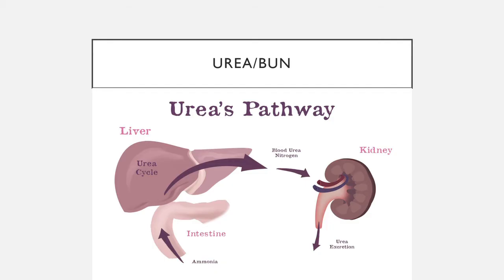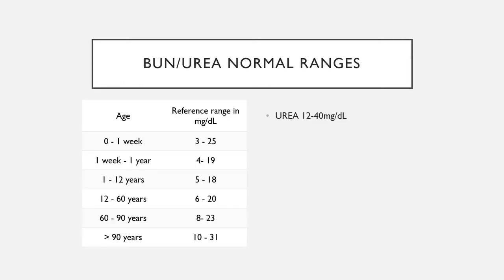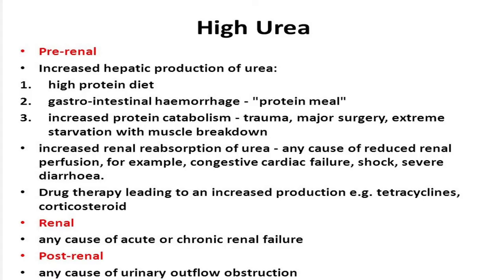The second parameter is urea, also called BUN or blood urea nitrogen. Urea is produced in the liver and excreted by the kidneys through urine. The normal range of urea is around 12 to 40 mg per deciliter, and BUN is roughly half that value. In adults aged 12 to 60 years, it is 6 to 20 mg per deciliter.